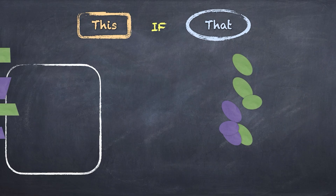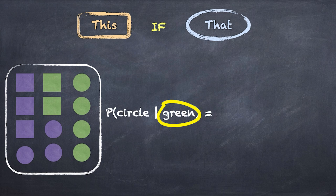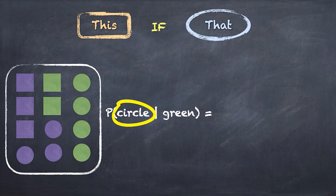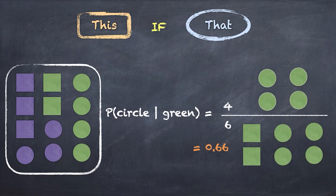Now we're talking about conditional probability — the probability of A given B. In this case, we've got a bag with circles and squares, and some of them are green and some are purple. Our question is: if we've taken out a shape and we know that it's green, what are the chances that it's a circle? Given that we know the shape is green, there are six possible outcomes in our denominator. Of those possibilities, only four of them are circles. So the probability of getting a circle, given that we know what we've got is green, is four over six, or 0.66.